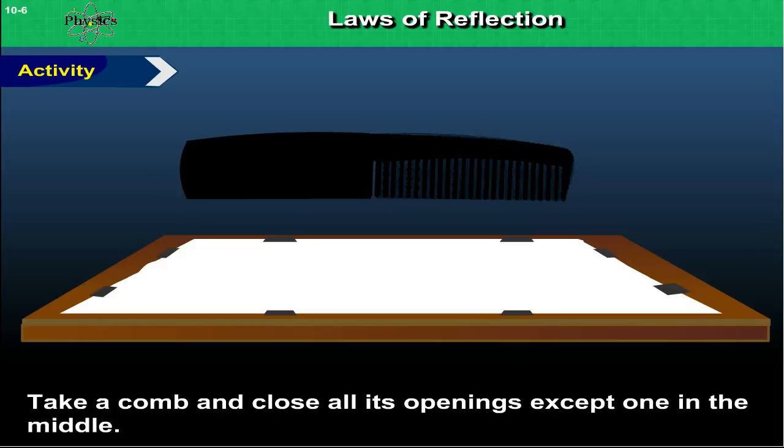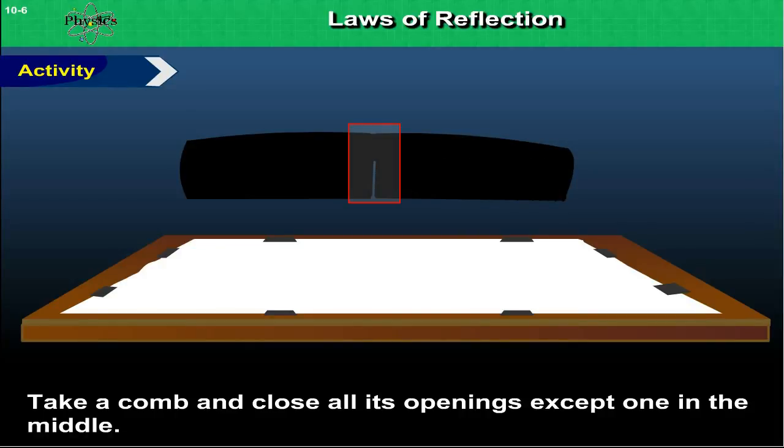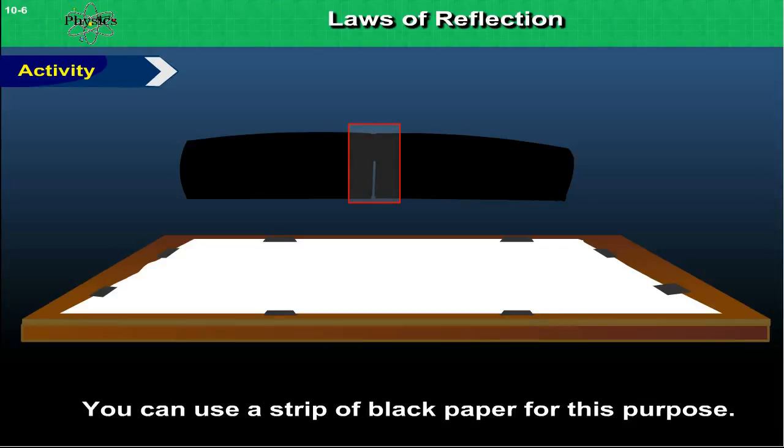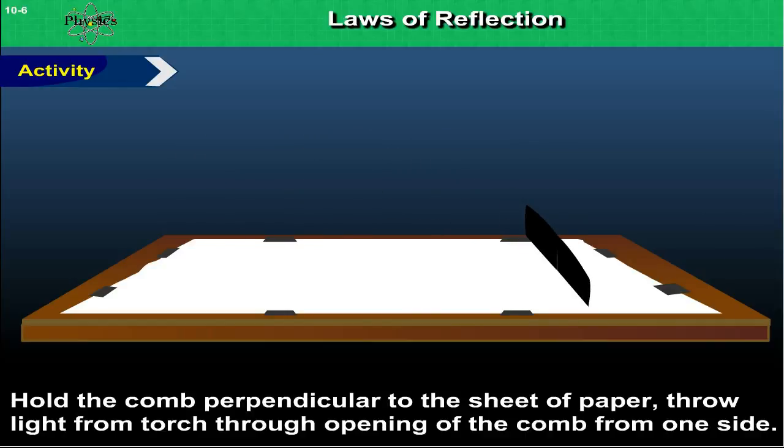Take a comb and close all its openings except one in the middle. You can use a strip of black paper for this purpose. Hold the comb perpendicular to the sheet of paper. Throw light from a torch through the opening of the comb from one side.